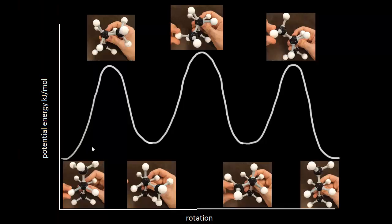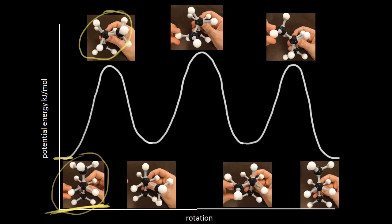Here's an energy diagram showing the different conformations we saw in the video. These pictures are just stills from the actual video. We started with the staggered conformation of butane, which has a certain potential energy. Going from this staggered conformation to the eclipsed conformation by rotating 60 degrees takes energy — the eclipsed conformation is higher in energy and less stable. The higher the potential energy, the less stable the conformation; the lower the potential energy, the more stable. So the staggered is more stable than the eclipsed.